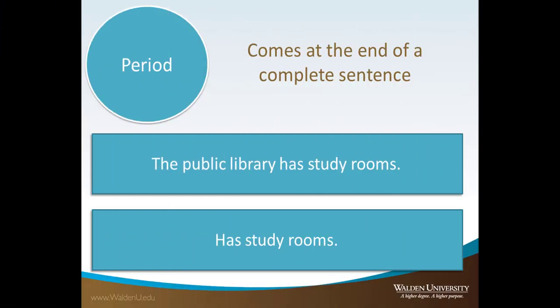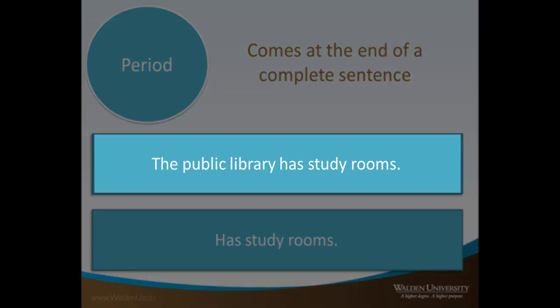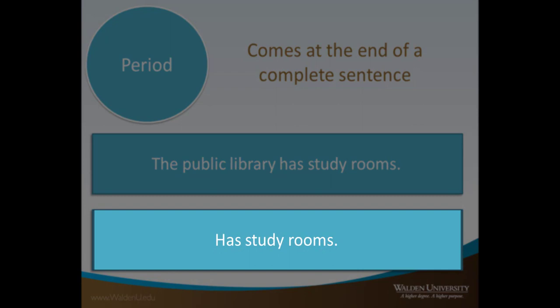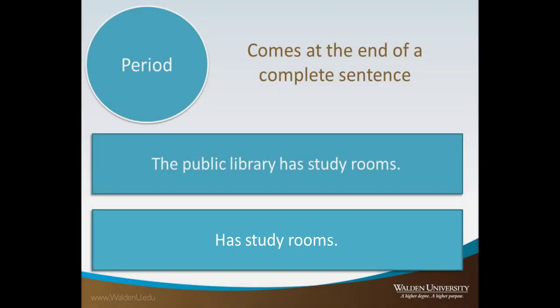Periods are the most common type of punctuation and they come at the end of a complete sentence. This example is correct because it is a complete sentence — it has a subject, verb, and a complete idea, and ends with a period. This example is incorrect because it is not a complete idea; it is only a phrase or group of words and not a complete sentence.